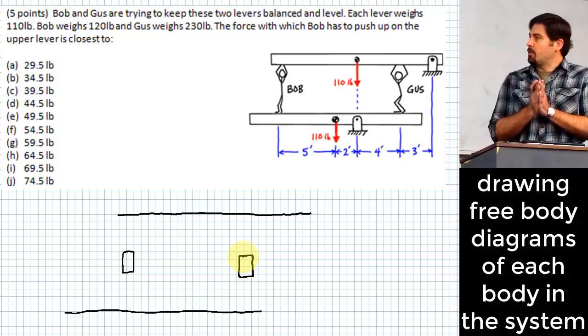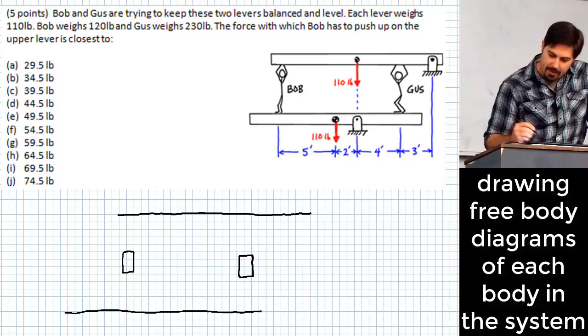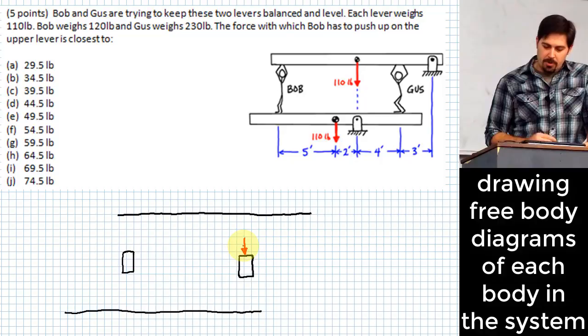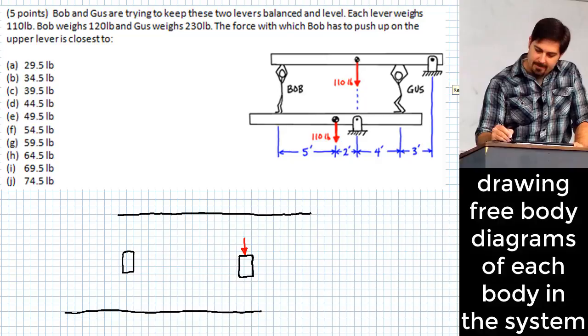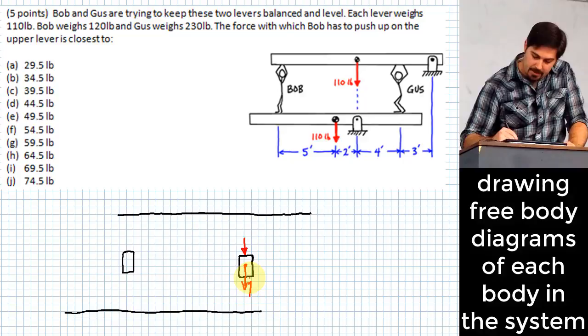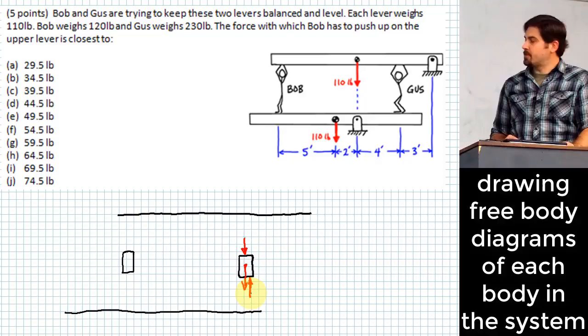Now let's look at, we're going to have to start with one of them. Which one do you want to start with? Gus. So what we have with Gus is that the beam, the upper beam, is going to be pushing down on Gus with a certain amount of force. And what do you want to name that force?